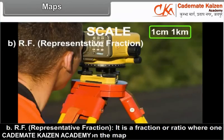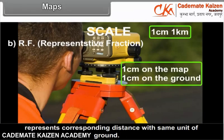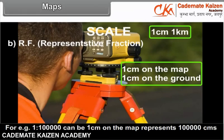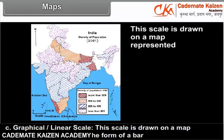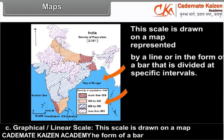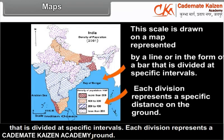B: RF — Representative Fraction. It is a fraction or ratio where one unit of any measurement on the map represents the corresponding distance with the same unit of measurement on the ground. For example, 1:1,00,000 means 1 cm on the map represents 1 lakh cm, i.e., 1 km on the ground. C: Graphical or linear scale — this scale is drawn on a map represented by a line or in the form of a bar divided at specific intervals. Each division represents a specific distance on the ground.